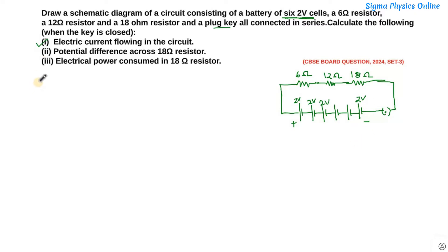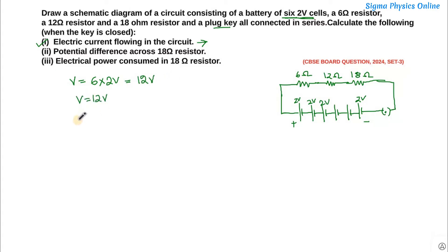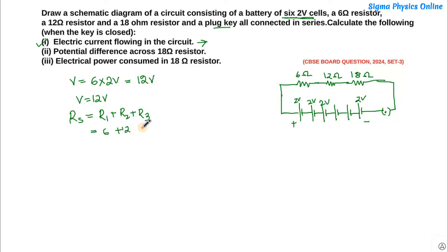Now we will find out the electric current flowing in the circuit. To find the current flowing, we need to find the total resistance and the total potential difference in the circuit. The total potential difference will be 6 cells each having a value of 2 volts, so the total potential difference is 12 volts — V equals 12 volts. The resistors are in series, so the equivalent resistance is R1 plus R2 plus R3, which is 6 plus 12 plus 18, equal to 36 ohms.